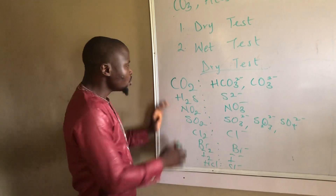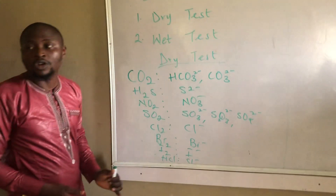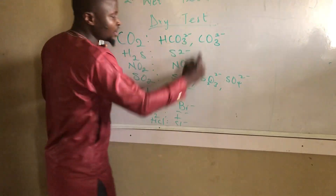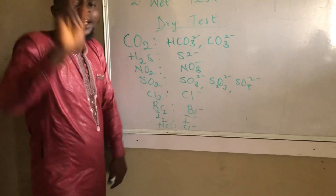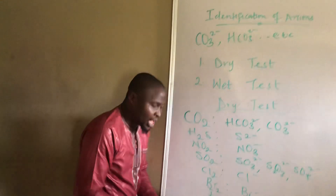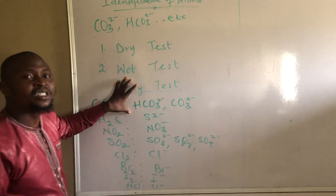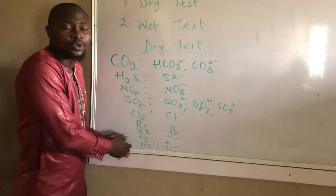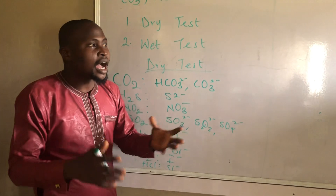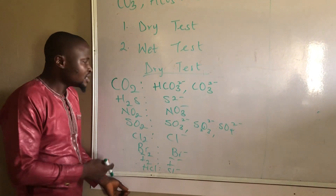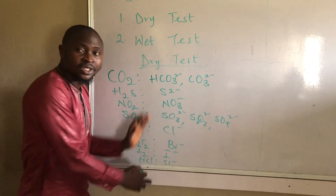If any of these gases is evolving, these are the corresponding anions that are present — that is lesson number one. Lesson number two: how do we know which gas is evolving when we heat a certain salt? Note that the dry test is not limited to heating the unknown substance alone — it also includes the addition of dilute acid into the unknown salt. If any of these gases is evolving, then the corresponding anion is present.